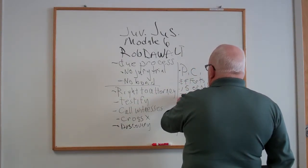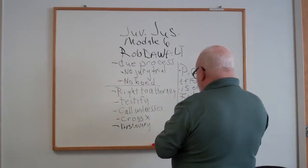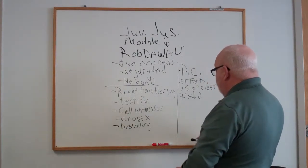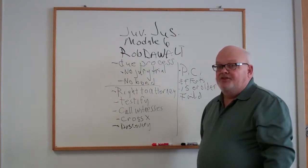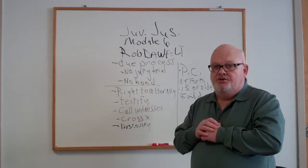And then basically what they have to do is show that the efforts have failed. So basically what they're saying is there's really nothing more that juvenile court can do. So basically what they're saying is juvenile court has failed this young person. And so they need to be processed in the adult system. That's the traditional way of what we call waiver or transfer into adult court.